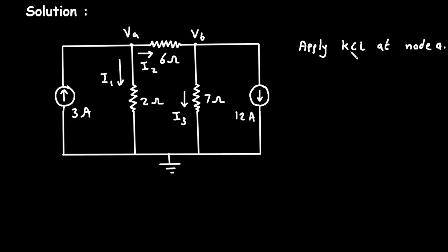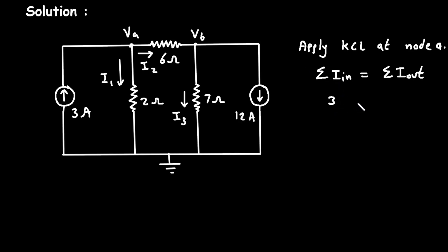Apply KCL at node A. Now according to KCL, that is Kirchhoff's current law, the summation of all the currents entering a node is equal to the summation of all the currents leaving the node. At this node, the entering current is this 3 ampere. The currents I1 and I2 are leaving from this node. So we write: 3 is equal to the leaving current I1 plus I2.